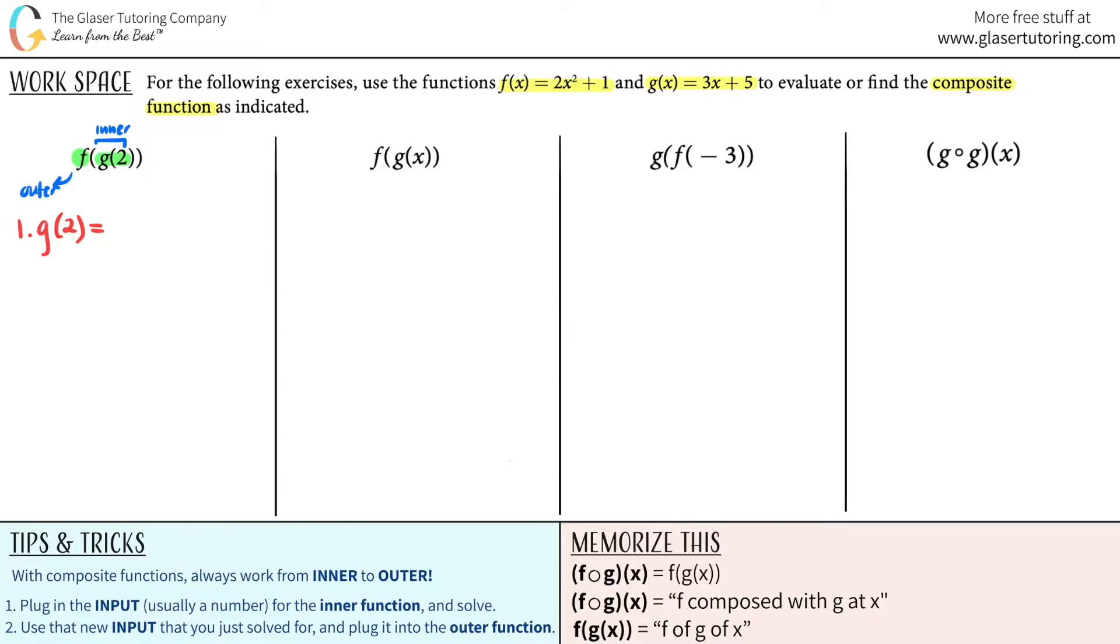So the first thing we're going to do is g of 2. That means we have to go to the g function, which is this one. The g function was 3x plus 5. With this number, for all x values, you will plug in that number. In this case, it's going to be a 2. So it will be 3 times 2, and then finish out the function, plus 5. Then just use your algebra, g of 2 equals 3 times 2 is 6. 6 plus 5 is 11. That's the answer to the first part.